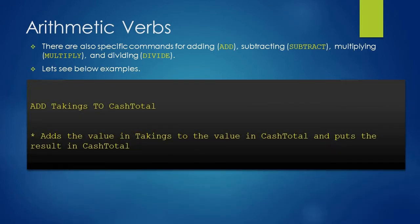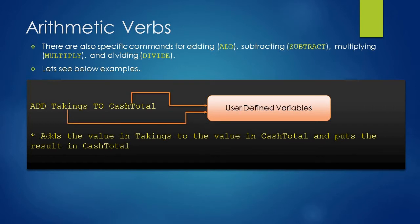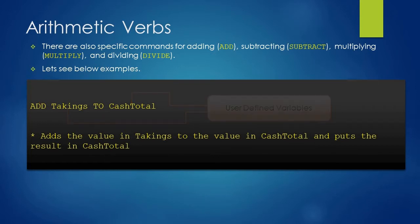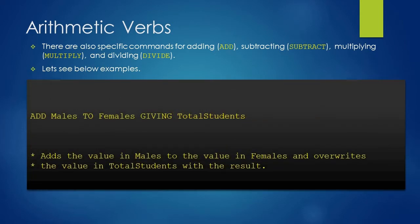The first example is to add the value of the takings variable to the cash total variable. Here, ADD and TO are the COBOL keywords, whereas takings and cash total are user-defined variables. When this statement is run, the value of takings will be summed with the value of cash total and the result will be put into cash total. So if takings is 100 and cash total is 200, after execution cash total will have a value of 300.